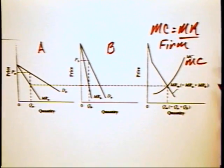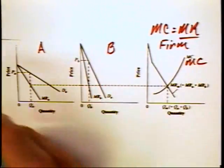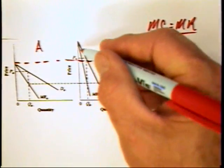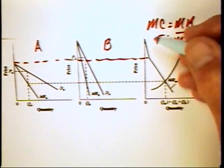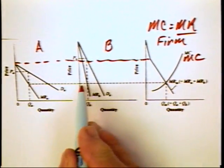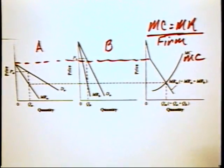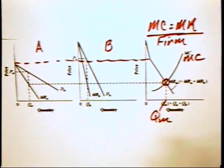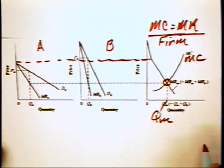Instead of summing the demand curves, all we really need to do is sum the marginal revenue curves. At any price above a certain point, the only marginal revenue curve you have is in market B, which is why you get a narrow marginal revenue curve that then expands out as we horizontally sum these distances. We end up with this combined marginal revenue curve, and the firm should produce where marginal cost equals marginal revenue, which gives us quantity QM.